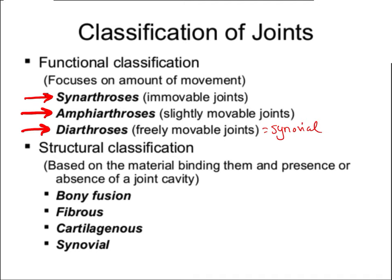We also classify joints according to how the bones are tied together — what material is going to bind the bones. We have fibrous joints where fibrous connective tissue joins the two bones together, cartilaginous joints using hyaline and fibrous cartilage, and then synovial joints which are unique and have different characteristics.